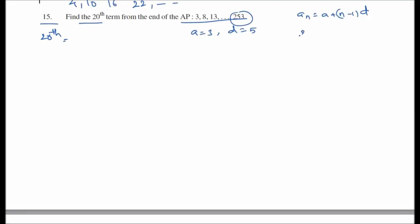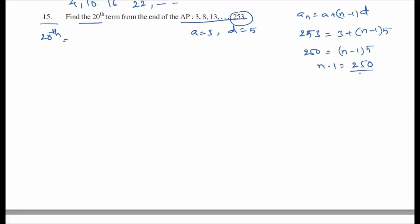So 253 equals 3 plus (n minus 1) times 5. This gives (n minus 1) times 5 equals 250, so n minus 1 equals 50, therefore n equals 51. There are 51 terms in the AP.